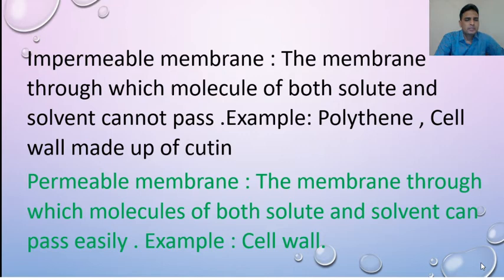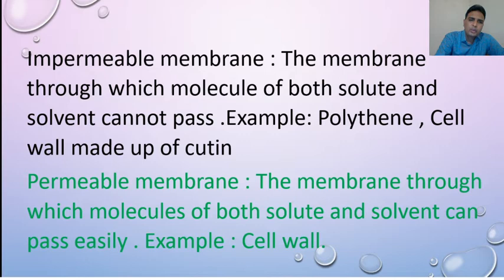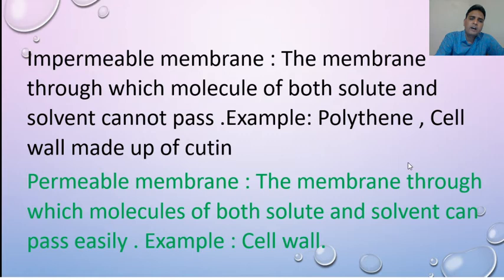Impermeable membrane is a membrane through which molecules of both solute and solvent cannot pass. Example: polythene. Can water or any solute pass through polythene? No — solute and solvent cannot pass through it. So this is the example of impermeable membrane. Another example is cell wall made up of cutane.